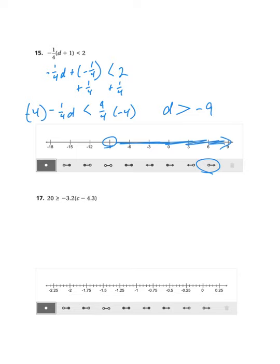Number 17 also has distributive property. This one also has decimals. So I'm going to rewrite the 20 is greater than or equal to. Then I'm going to distribute this negative 3.2. And I have a negative times a negative, so this will be a positive. I just need to figure out what is 4.3 times 3.2.